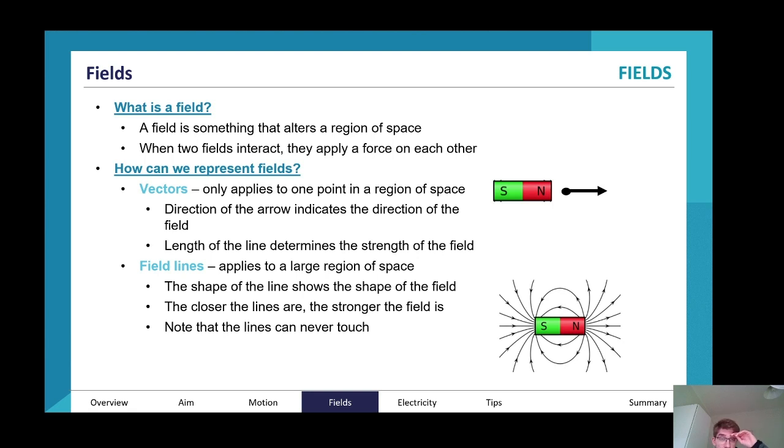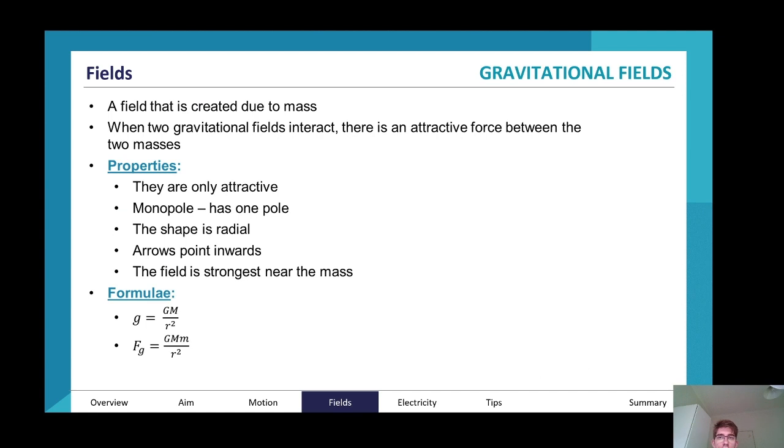Let's get on to the topic of fields. We've been here for two hours, we can do half an hour more. What is a field? A field is a 3D region of space, and when two fields interact, they apply a force on each other. We represent fields using vectors, aka arrows. The shape of the field shows the shape of the field. The closer the lines are, the stronger the field is, and know that the lines can never touch.